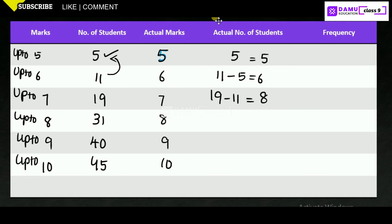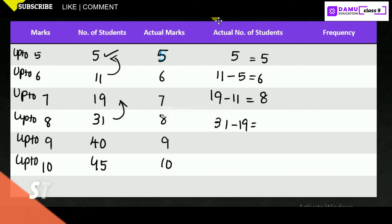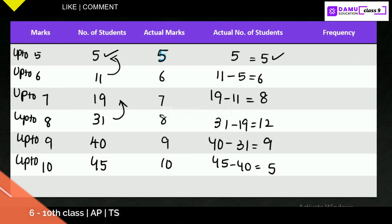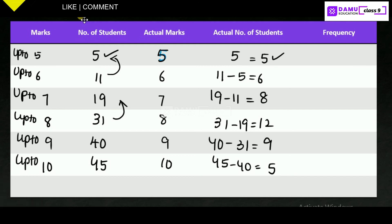For exactly 8 marks: 31 minus 19 equals 12 students. For exactly 9 marks: 40 minus 31 equals 9 students. For exactly 10 marks: 45 minus 40 equals 5 students. So the actual frequency table gives us: 5 marks → 5, 6 marks → 6, 7 marks → 8, 8 marks → 12, 9 marks → 9, 10 marks → 5.